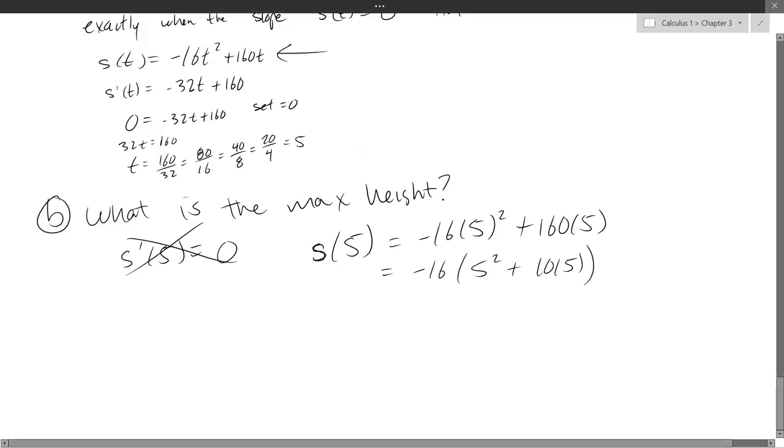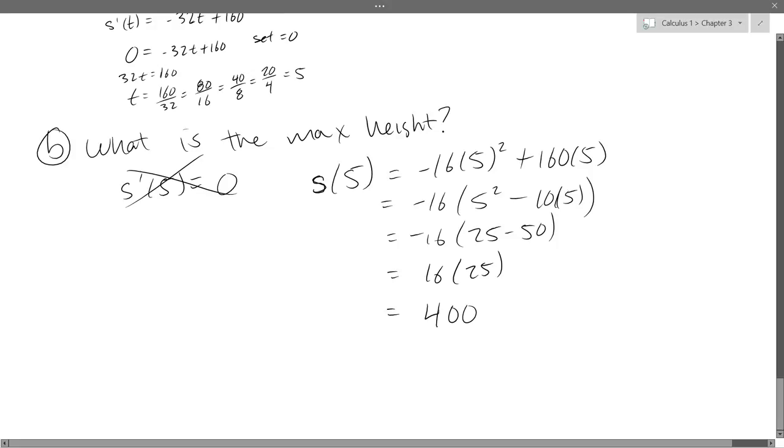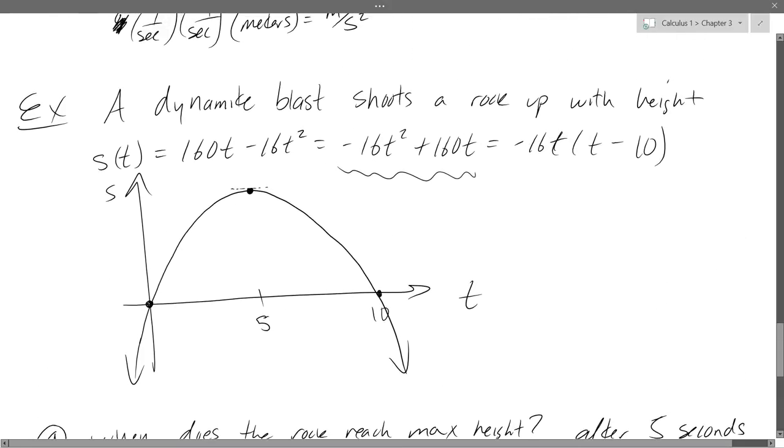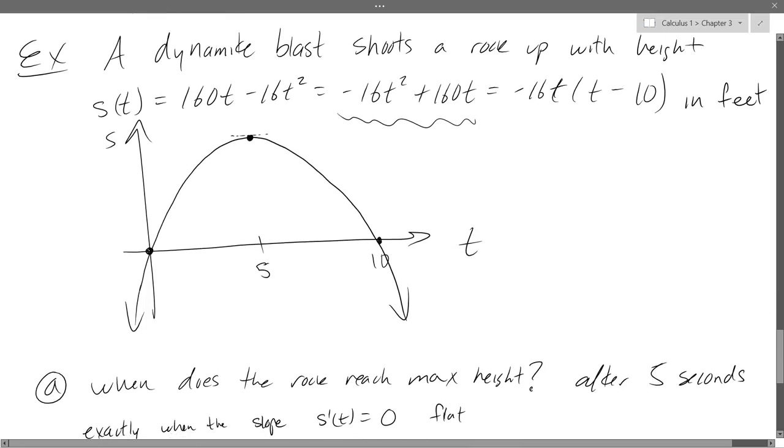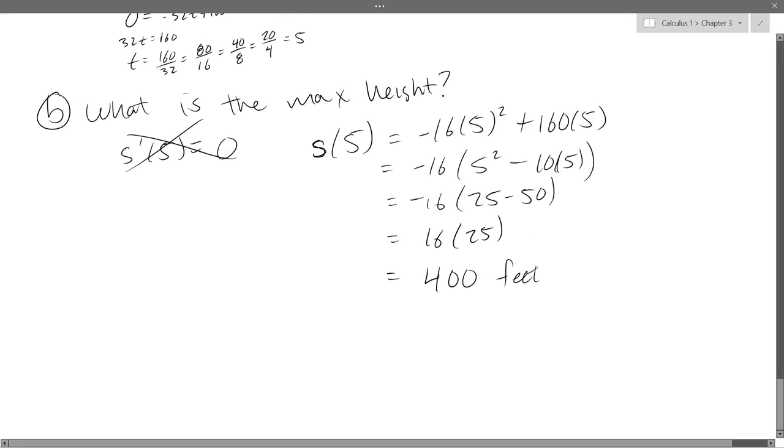So I'll go with this version right here. Negative 16, 5 squared, plus 160 times 5. Let's factor out negative 16, and we have 5 squared plus some more, 10 times 5. So it's 25 minus 50, which is negative 25, so it's 16 times 25, which is 400. 400, I think we're measuring in feet somewhere. This is in feet, and t is in seconds. So reach 400 feet at, after 5 seconds. So that's max height.